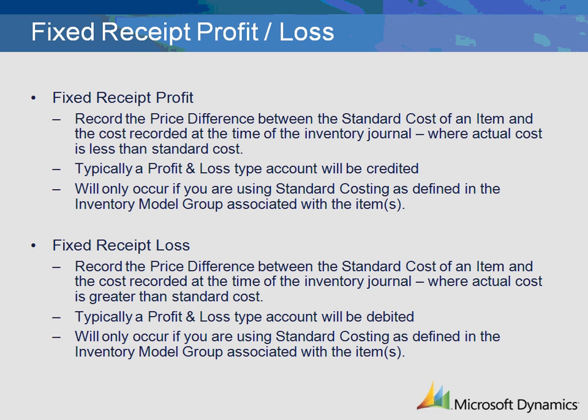The fixed receipt price loss transaction is the setup related to the recording of the price difference between the standard cost of an item and the cost recorded at the time of the inventory journal posting, where the actual cost is greater than the standard cost of the item. The Ledger account is typically a profit and loss type account that will be debited at the time of the inventory profit and loss posting. This transaction will only occur if you are using standard costing as defined in the inventory model group associated with the item.